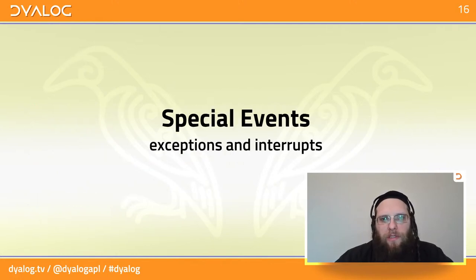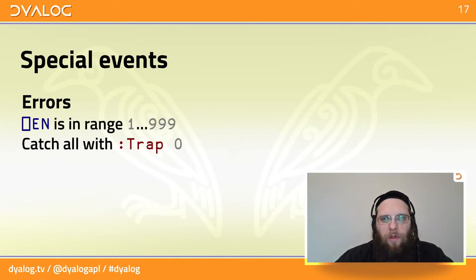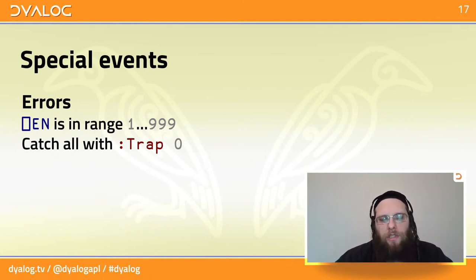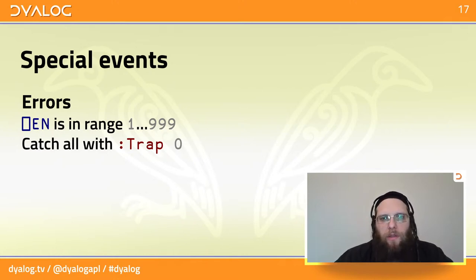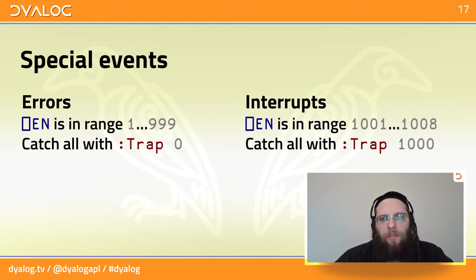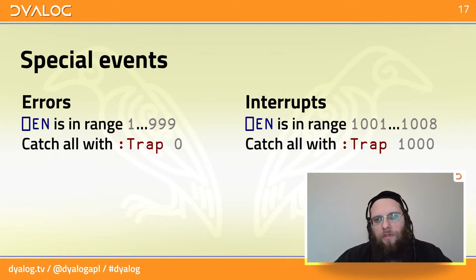Special events. Every error has a number between 1 and 999 — only the lower 100 are built-in APL errors, but you can use higher numbers for your own. You can trap them with specific numbers or use zero to mean all of them. Beyond 999 are interrupts, numbered from 1000 up — only eight specific ones are defined and you can't create custom ones. You can trap all interrupts with 1000. Trap zero does not trap interrupts; trap 1000 does not trap errors. To trap everything, write colon trap 0 1000.